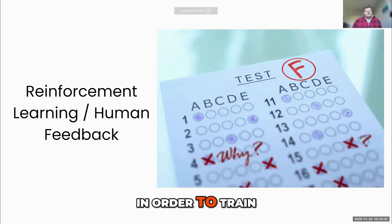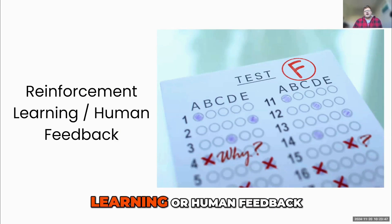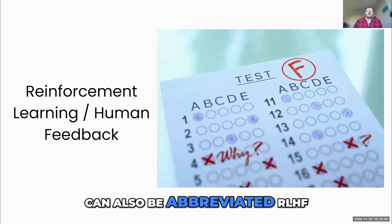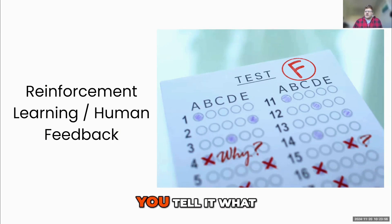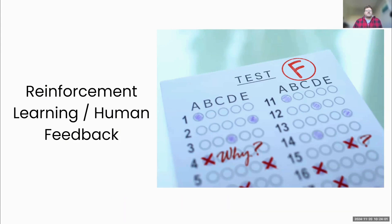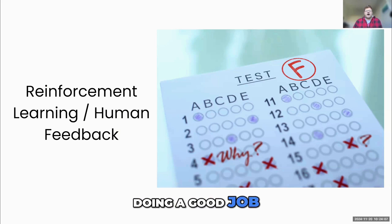In order to train an AI, another important thing that's done is called reinforcement learning, or reinforcement learning from human feedback, which can also be abbreviated RLHF. The idea here is that an AI gives you an output and then you grade it — you tell it what you think of that output, what the quality of it is. This allows the system to learn and figure out if it's doing a good job.